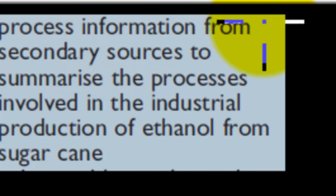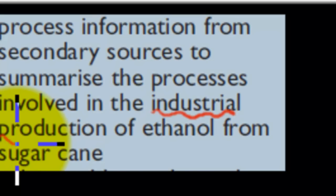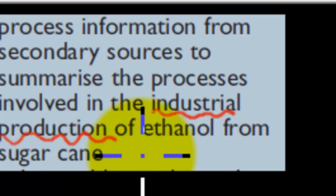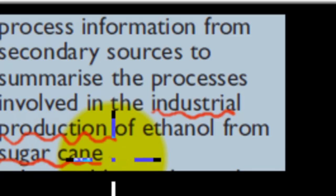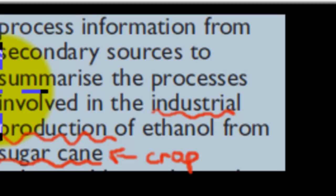The dot point says: process information from secondary sources to summarize the processes involved in the industrial production of ethanol from sugarcane. There's a couple of different words we need to know. The industrial production refers to how the industry makes ethanol from sugarcane, which is a crop that we plant. And we need to summarize, which means give a brief detailed outline of how that happens.